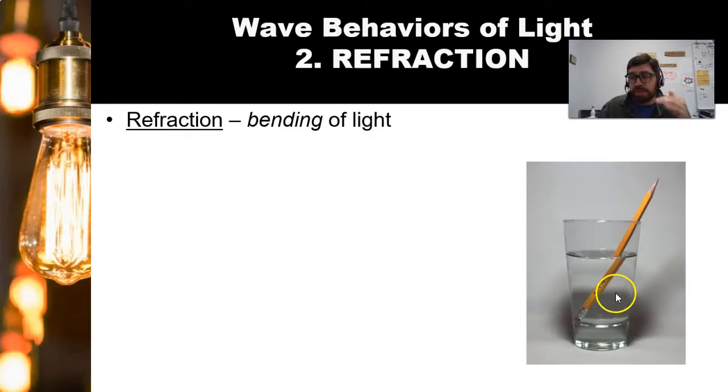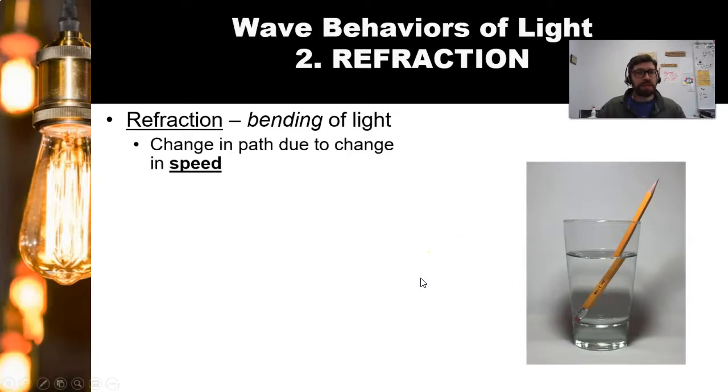So for the pencil in the cup, the reason it looks bent is light is going from water into glass into air. There's a lot more I could go into with this. But basically, what you need to know is that the medium controls the speed of a wave. Because the medium is changing, that means the speed is changing. And without going into further detail, you need to know that when the speed changes, because light is a wave and not a simple particle, because it's three-dimensional in shape, part of the wave gets into the new medium before the rest of the wave does.